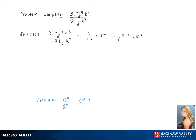Simplifying this, we get 1/4 i to the 5th times j to the 8th times k to the negative 5th.